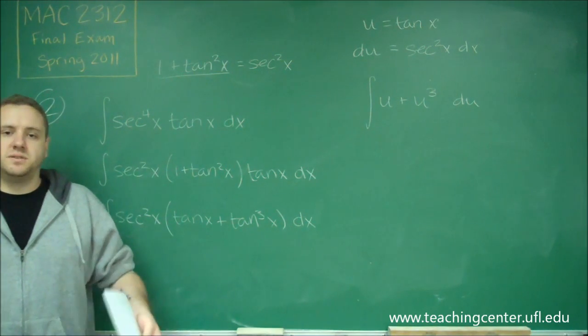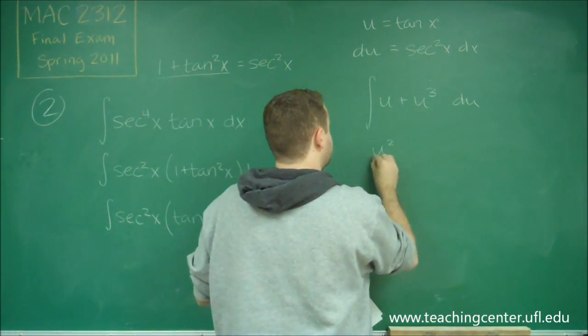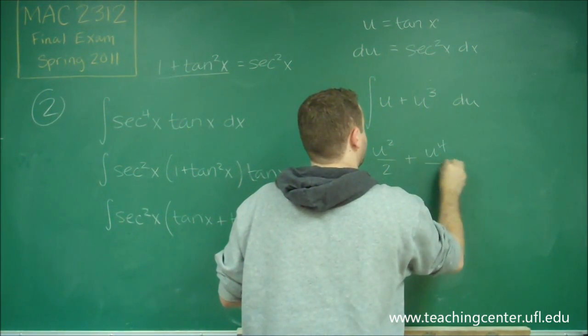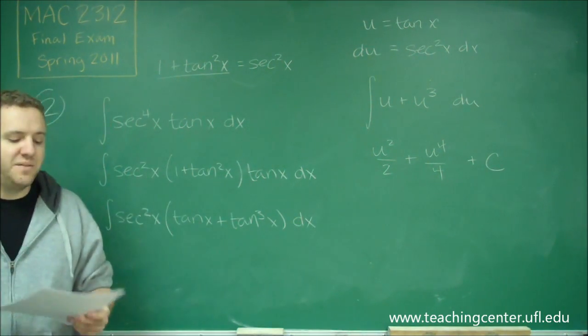Now this is just using your standard power rule for anti-derivatives. So we get u squared over 2 plus u to the 4th over 4 plus c, because we have an indefinite integral here.